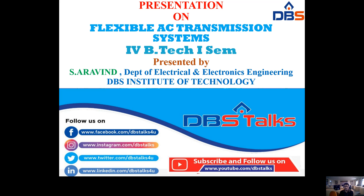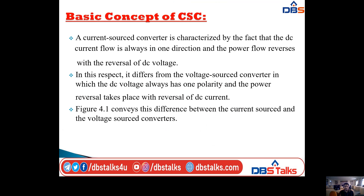Firstly I will start with the basic concept of the current source converter and then go with a three-phase full wave diode rectifier. A current source converter is characterized by the fact that the DC current flow is always in one direction and the power flow reverses with the reversal of DC voltage. In this respect it differs from the voltage source converter, in which the DC voltage always has one polarity and power reversal takes place with the reversal of DC current. I will show a diagram that conveys the difference between the current source and voltage source converters.